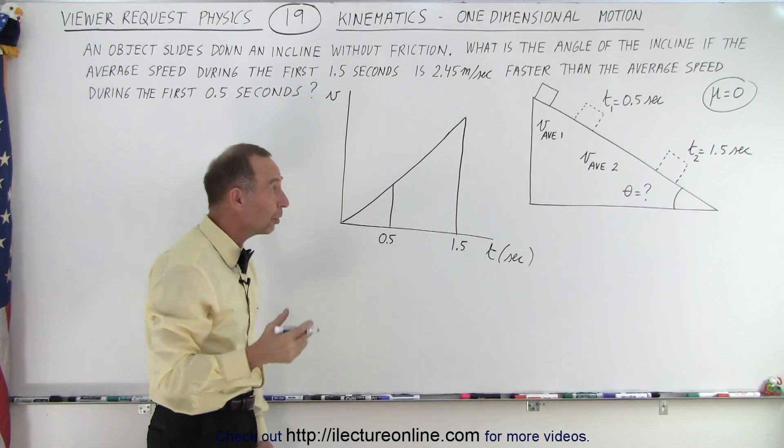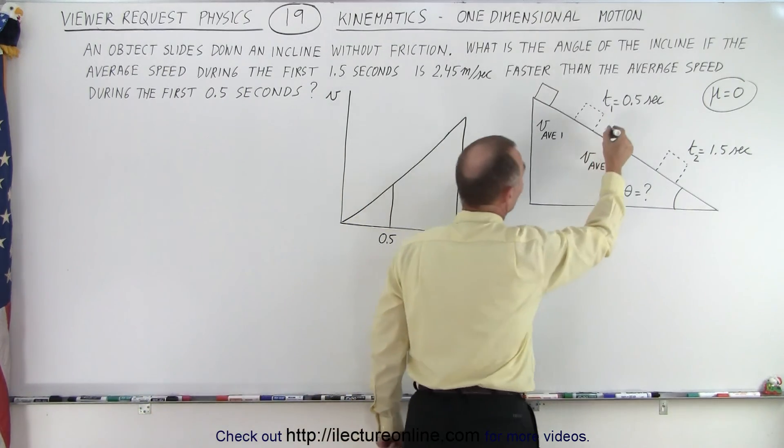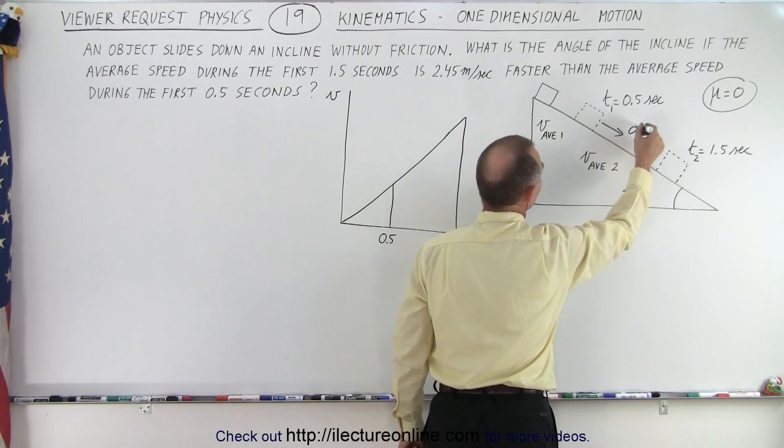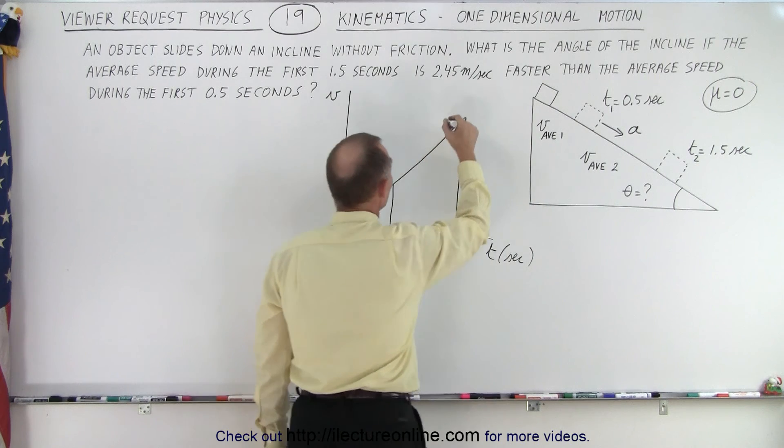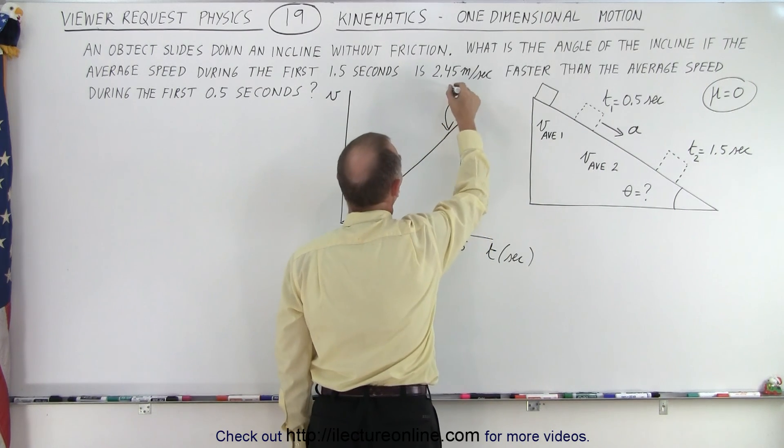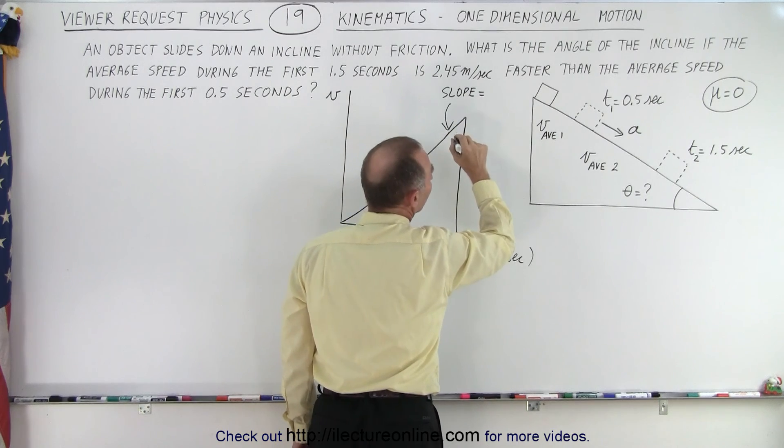We don't know the slope because the slope will be the acceleration. So the object is going to have an acceleration, A, which is not going to be the free fall acceleration of G. And the slope in this case, the slope of this graph, is indeed the acceleration.